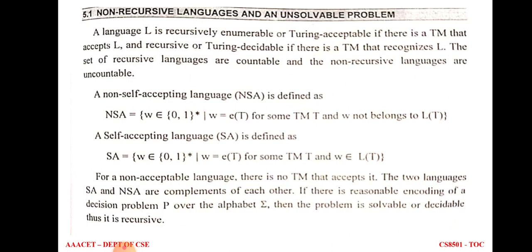NSA is defined by the input string belonging to {0,1}* for some Turing machine, where that input string does not belong to the language of that Turing machine. SA is defined by the input string belonging to {0,1}* for some Turing machine, where that input string belongs to the language of that Turing machine. For a non-self accepting language, there is no Turing machine to accept it. The two languages SA and NSA are complements of each other.